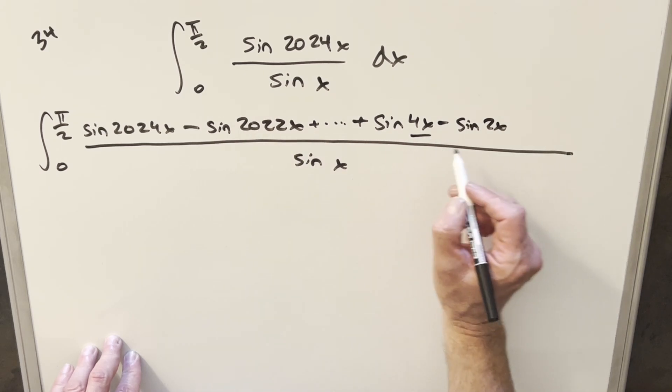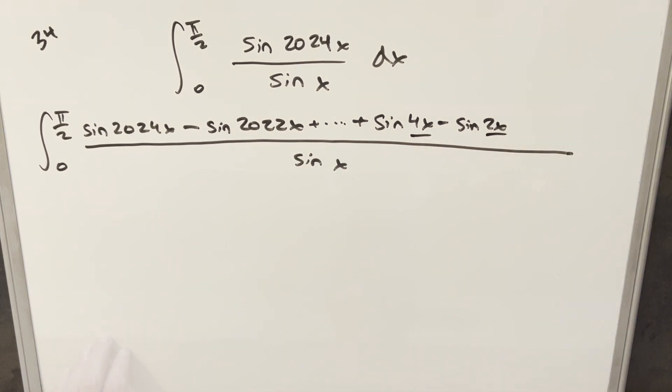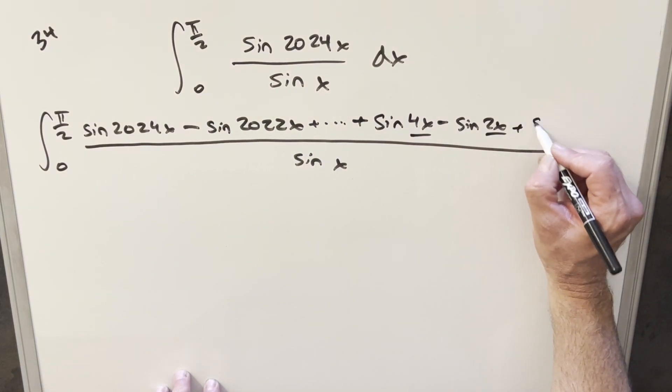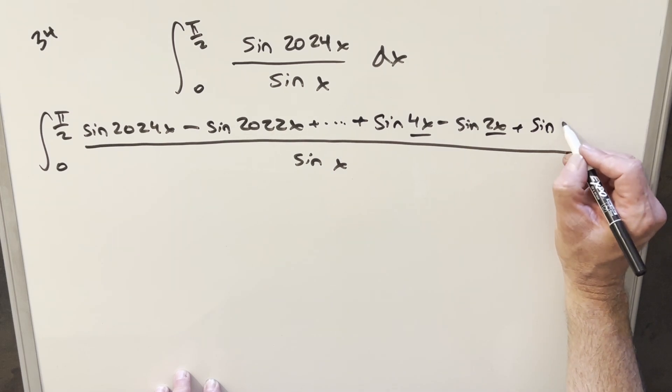Notice again, all the angles are differing by just 2 or 2x. And then again, we don't want to change it here, so we're just going to add sine 2x.